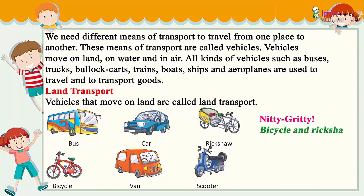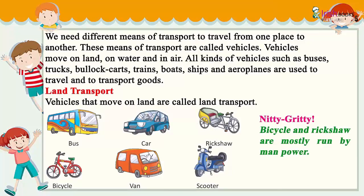Vehicles that move on land are called land transport. Examples include bus, car, rickshaw, bicycle, van, and scooter. Bicycle and rickshaw are mostly run by manpower.